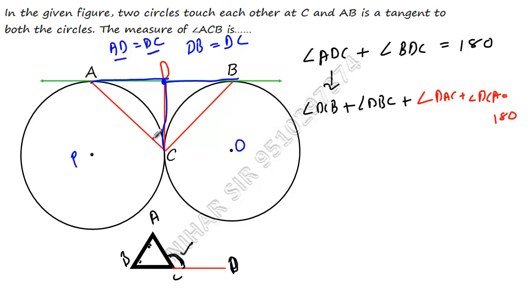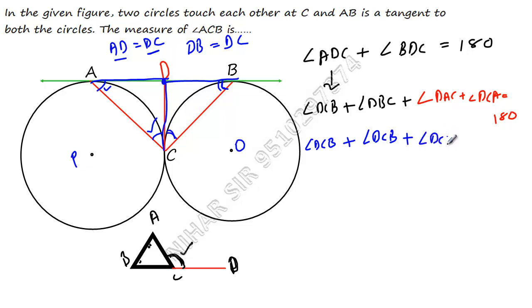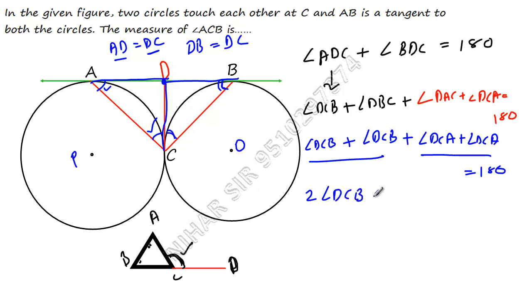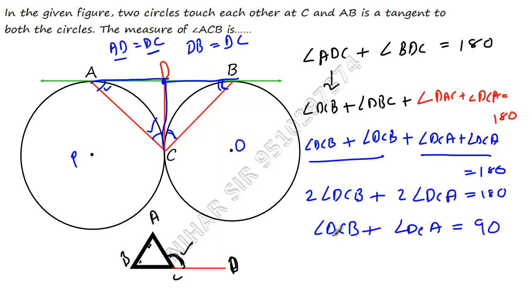Since DB equals DC, the angles opposite to those equal sides are equal — so angle DCB equals angle DBC. Similarly since AD equals DC, angle DAC equals angle DCA. Substituting back: instead of DBC we write DCB, and instead of DAC we write DCA. So we get 2·angle DCB plus 2·angle DCA equals 180°. Taking 2 as common: angle DCB plus angle DCA equals 90°.